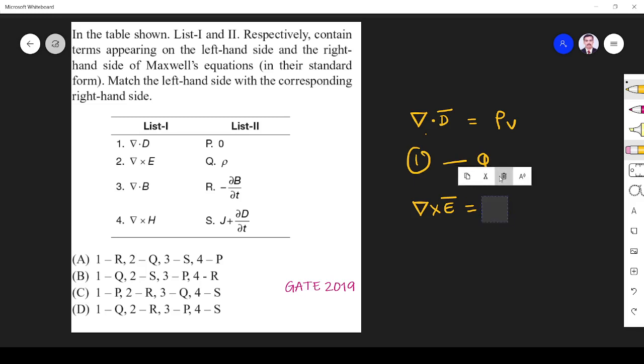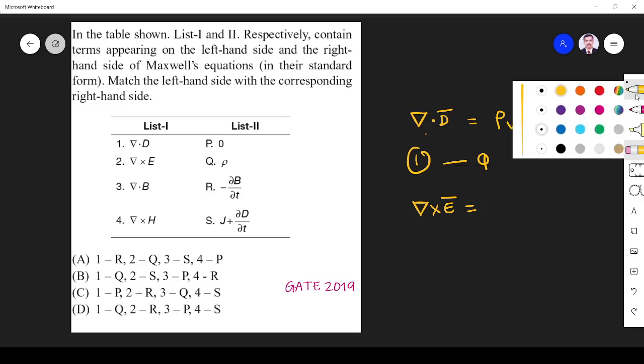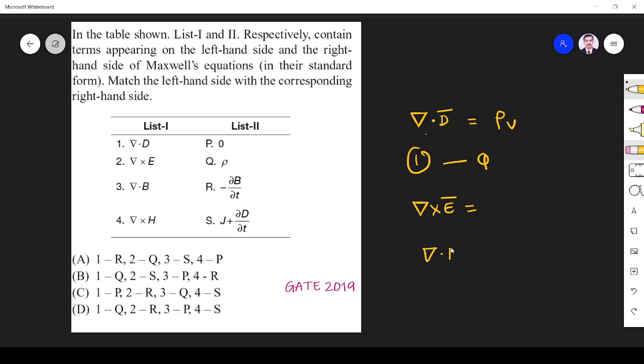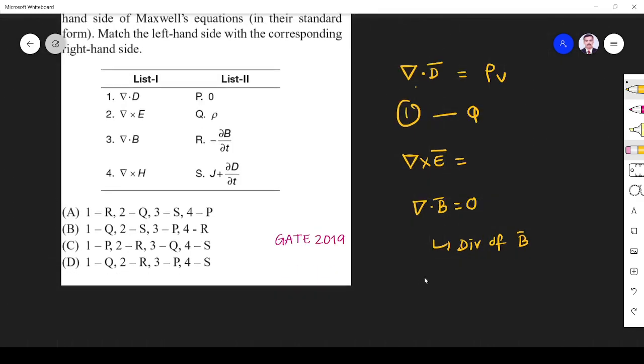We know ∇×E is equal to 0, and we know ∇·B, divergence of magnetic field. Magnetic field never diverges, so this is 0. That means 3 is P.